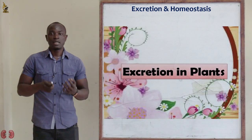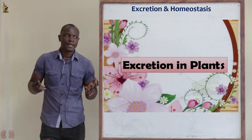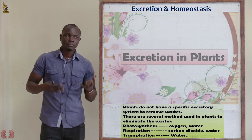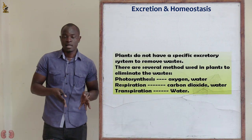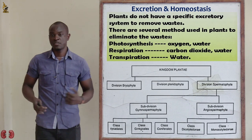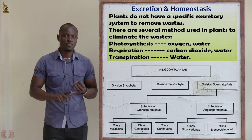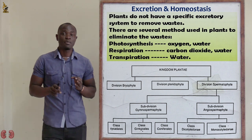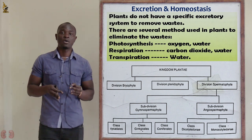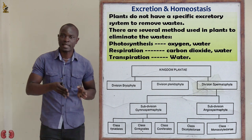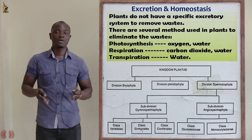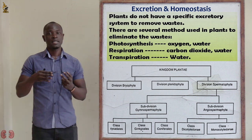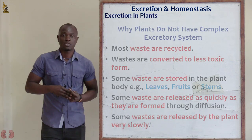Let's now look at excretion in plants. Plants belong to Kingdom Plantae, which includes the different divisions: Division Bryophyta, Division Pteridophyta, and Division Spermatophyta. So when we talk about excretion in plants, we are talking about organisms under Kingdom Plantae and those falling under these divisions.